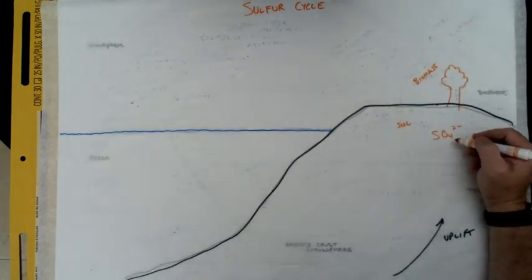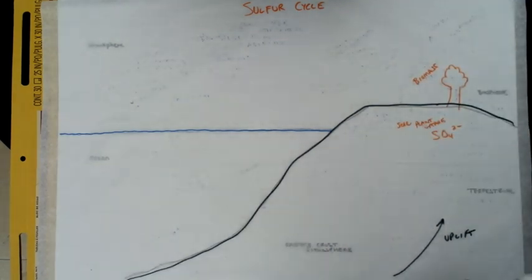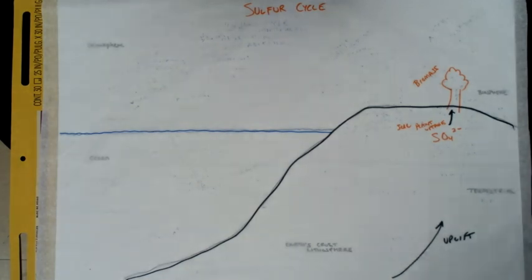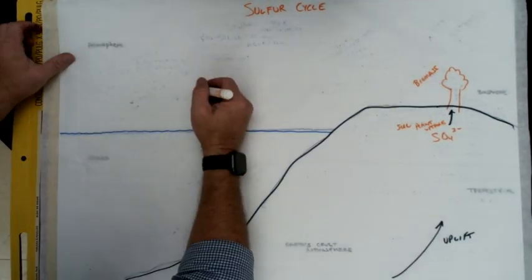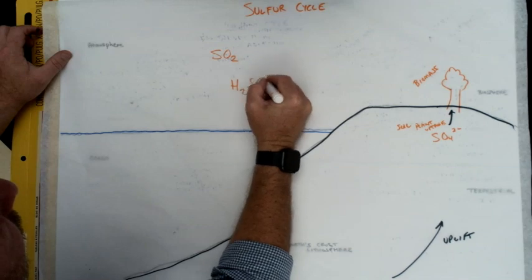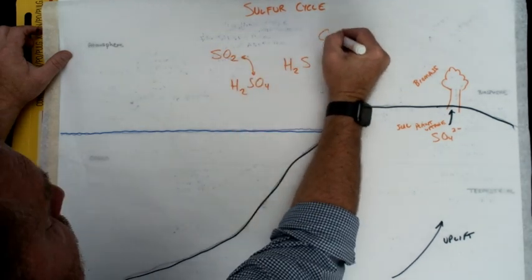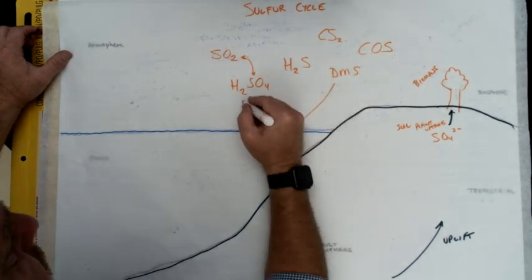This shows how it moves all the nutrients and chemicals. So this is the sulfur cycle, and I start with the biomass and soil and the sulfate ions, and then look at the water component with water vapor and the gases and how they mix in the atmosphere.